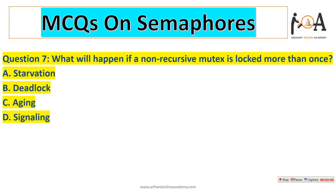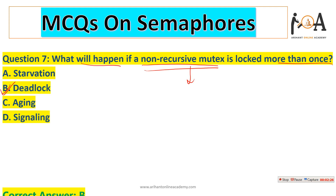The next question: what will happen if a non-recursive mutex is locked more than once? If a non-recursive mutex is locked more than once, it will cause a deadlock because it will not allow other processes to execute and will block the complete scenario. So deadlock would occur.